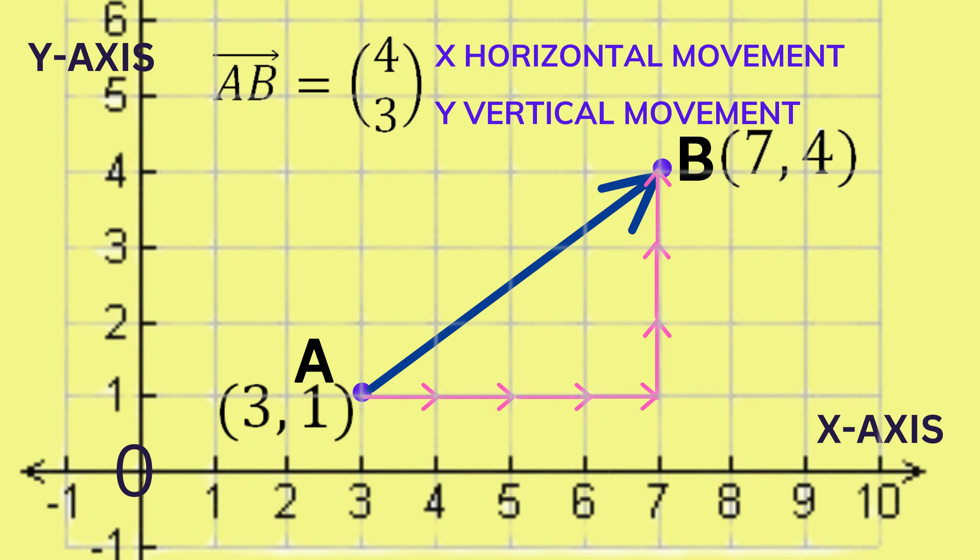For horizontal movement, positive numbers indicate movement to the right, while negative numbers indicate movement to the left. For vertical movement, positive numbers indicate moving upwards, while negative numbers indicate movement downwards.